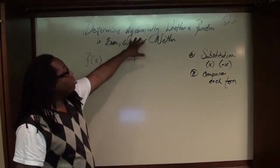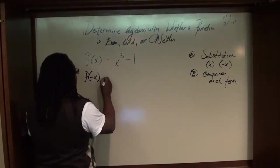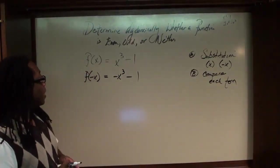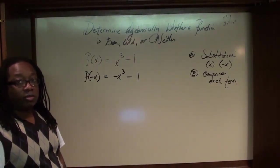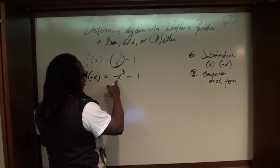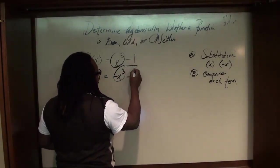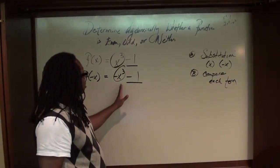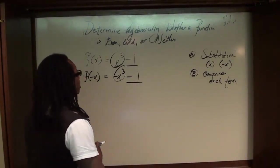Here we're determining algebraically whether a function is even, odd, or neither. The first thing we do is make a substitution: f(-x) equals negative x cubed minus 1. This is already simplified — no additional arithmetic needed. Comparing the first term: x cubed is exactly opposite of negative x cubed. But the second terms are exactly the same: negative 1 and negative 1. Since one term is opposite and one is the same, the answer is neither — the function is neither even nor odd.